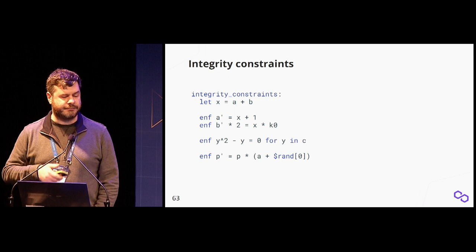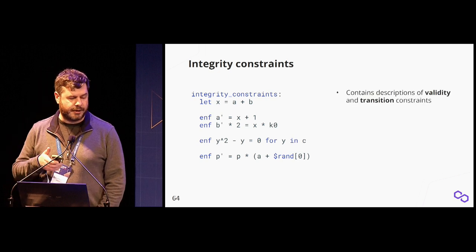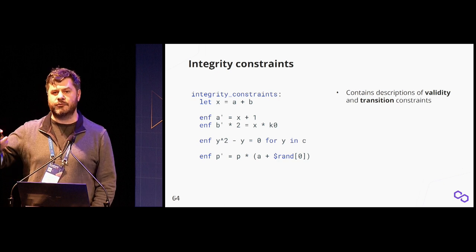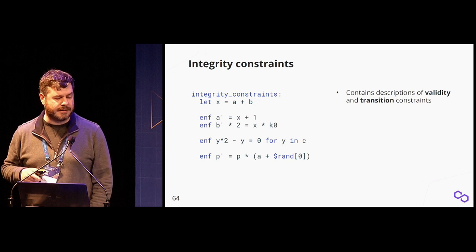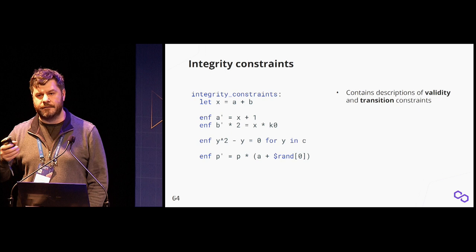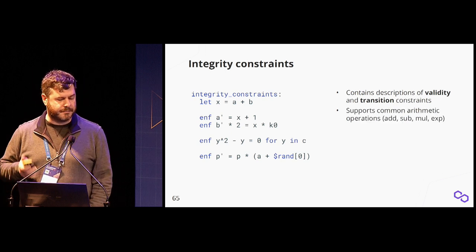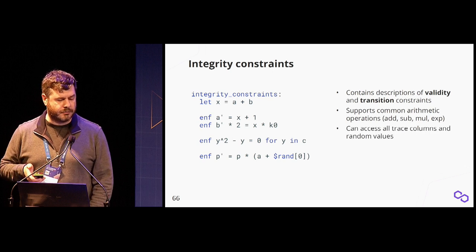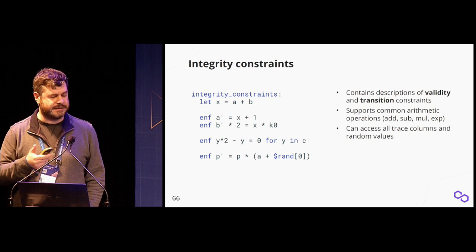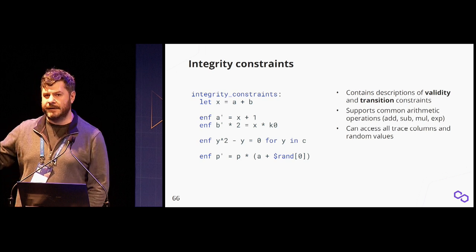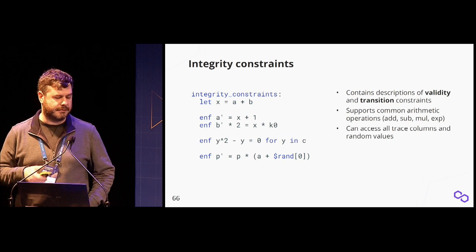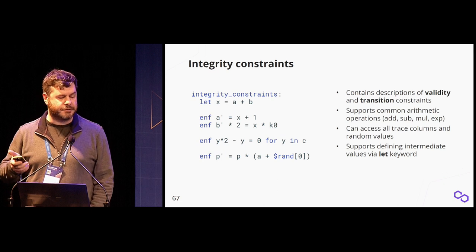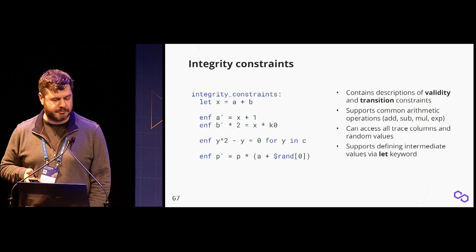Integrity constraints combine validity and transition constraints. The 'enf' keyword specifies a constraint, and the prime symbol denotes the next value in the next row. So 'A prime equals X plus one' means the next value in column A equals X plus one, where X is defined as A plus B. We support addition, multiplication, and exponentiation by a constant. You can reference all trace columns and random values—for example, a dollar-sign prefix accesses the first random value sent by the verifier. You can also define intermediate variables for common sub-expressions.